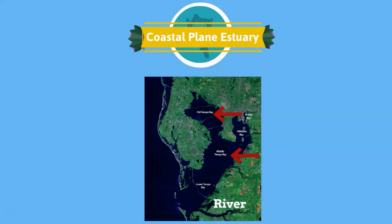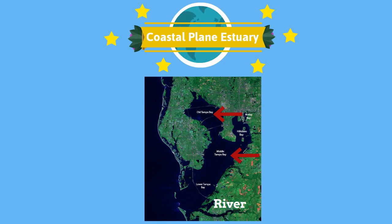Coastal plain estuaries look like valleys with gentle sloping bottoms. Their depth increases towards the river's mouth. This type of estuary is common throughout the world, and an example is Tampa Bay in the US.